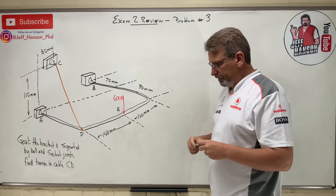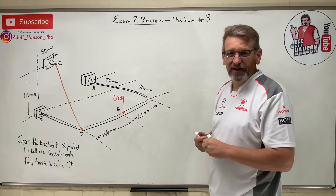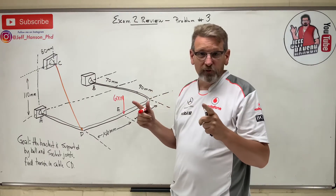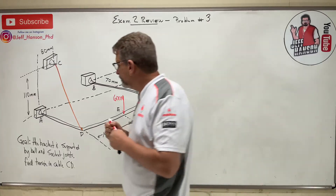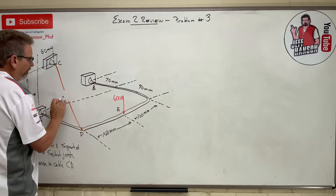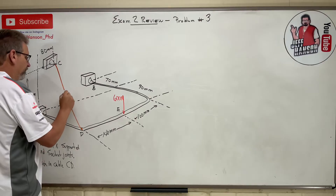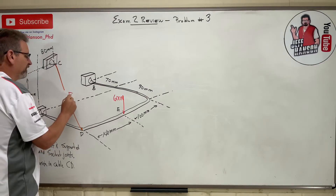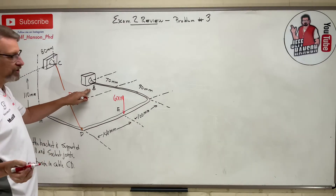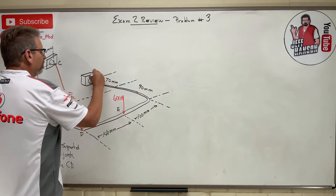Find the tension in cable DC. The first thing I want to do is put on the reaction forces at A and B on the bracket. This force goes from D to C, so we'll call it F_DC. Over here I have a pin connection — I have no idea which way the reactions go, so I'm just going to assume positive.